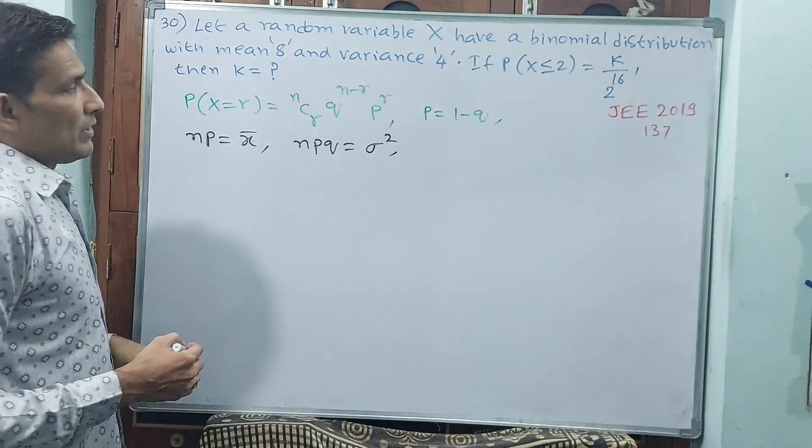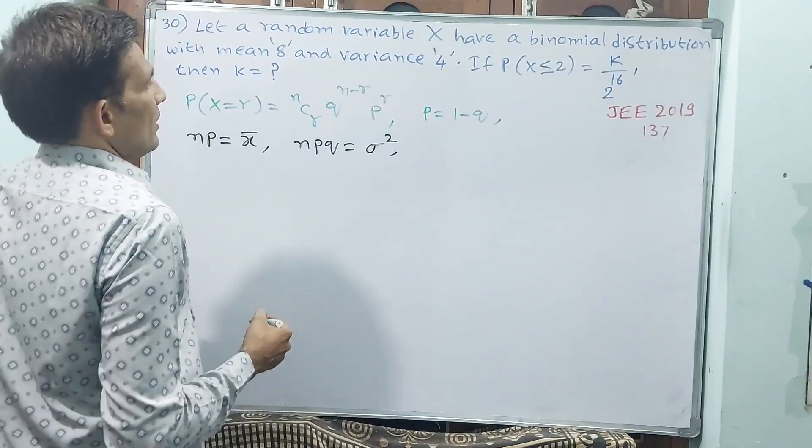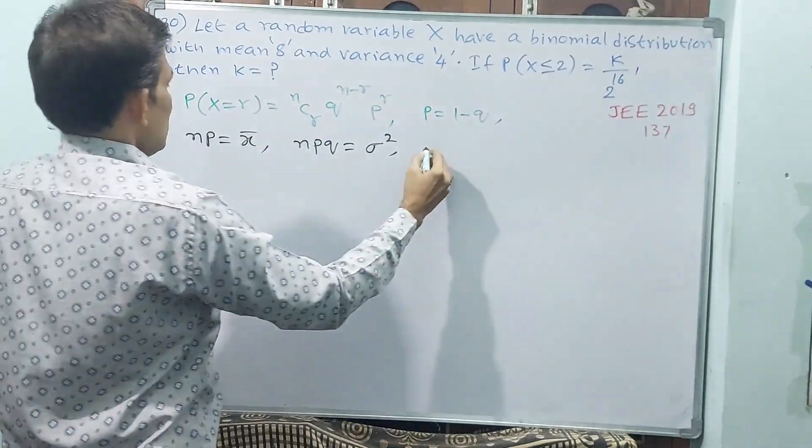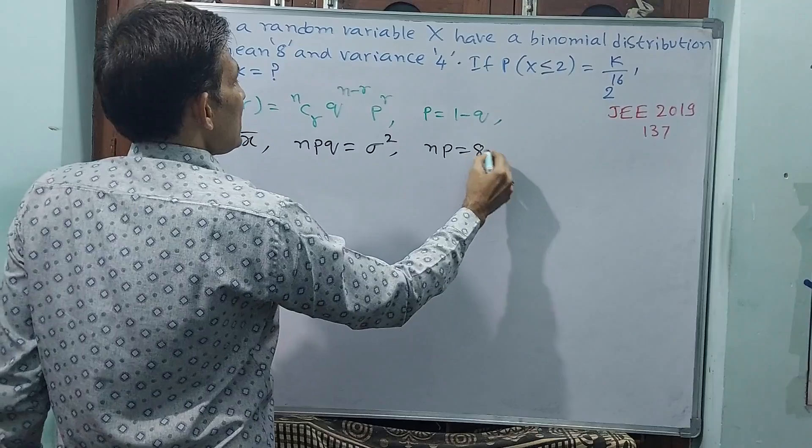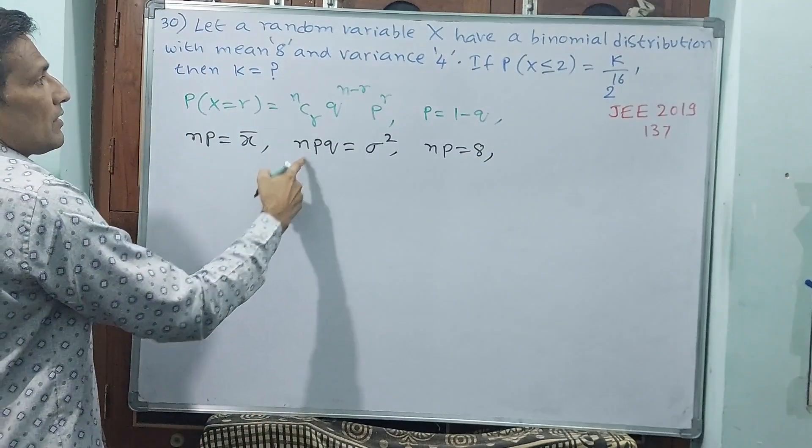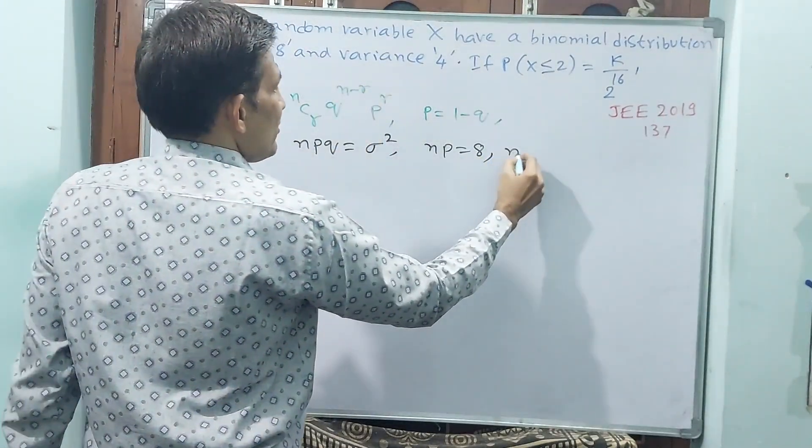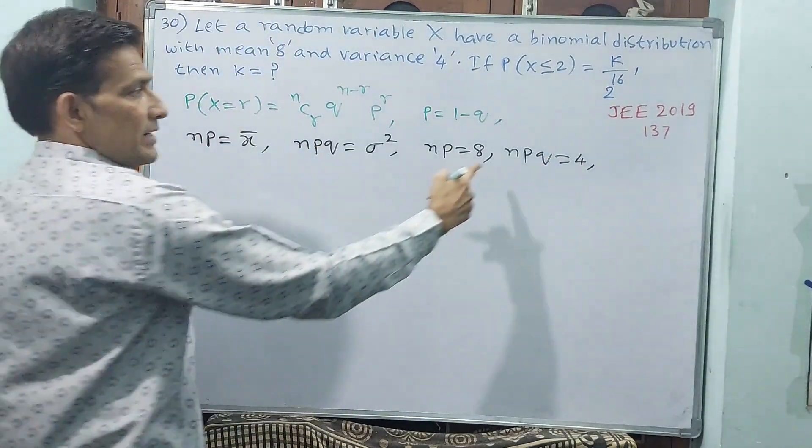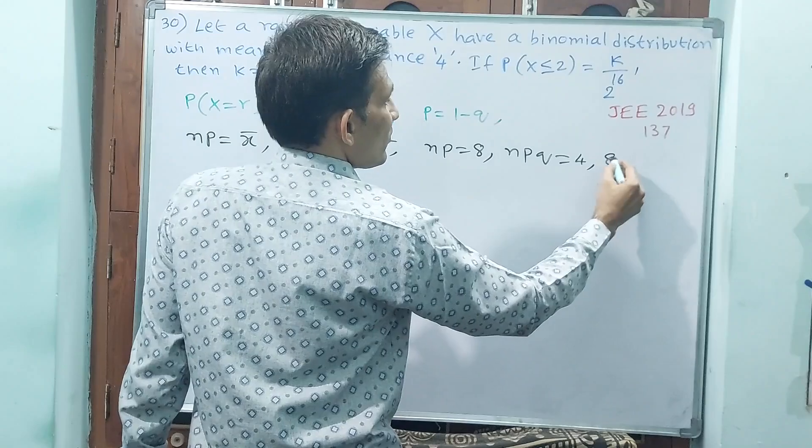Now let us see. First of all, mean = 8, that means np = 8. Variance = 4, that means npq = 4. In that case, replacing np, we get 8q = 4. Therefore, q = 1/2.